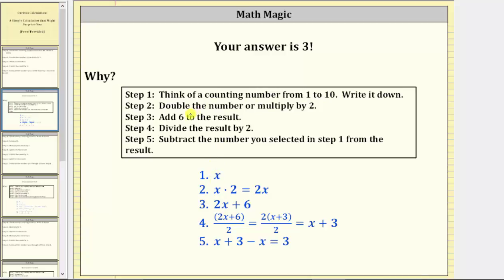Step two was to double the number or multiply by two. So if we have x and multiply by two, x times two is equal to two x.